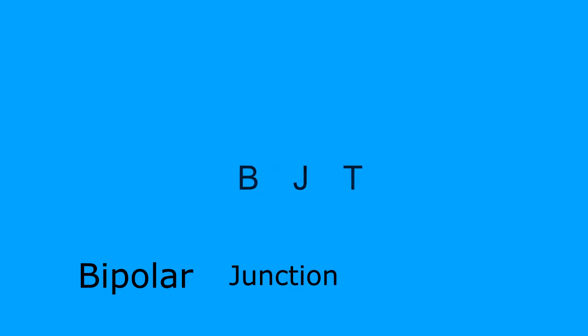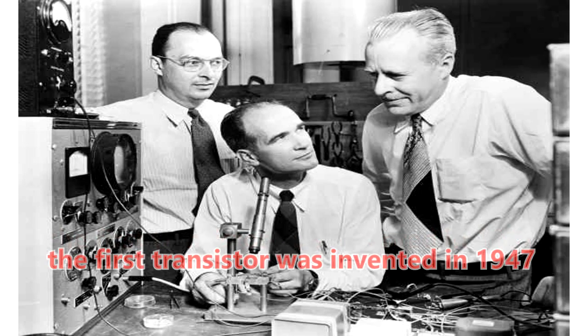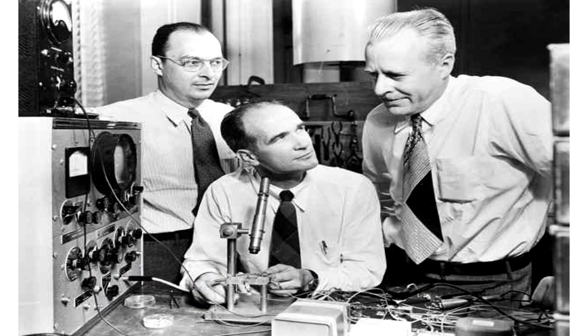Hey guys, today we're going to talk about BJT. Those three words refer to Bipolar Junction Transistor. The first transistor was invented in 1947 by three scientists: John Bardeen, Walter Brattain, and William Shockley, and those three scientists were awarded the Nobel Prize for that invention.